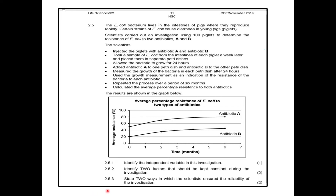This is a very nice question we can go through together. Before we look at the questions, we must read the introduction and get some context. The E. coli bacterium lives in the intestines of pigs where they reproduce rapidly. Certain strains of E. coli cause diarrhea in young pigs or piglets. Scientists carried out an investigation using 100 piglets to determine the resistance of E. coli to two antibiotics A and B. The scientists injected the piglets with antibiotic A and antibiotic B, took a sample of E. coli from the intestines of each piglet a week later and placed them in separate petri dishes, allowed the bacteria to grow for 24 hours, added antibiotic A to one petri dish and antibiotic B to the other, measured the growth of the bacteria in each petri dish after 24 hours, and used the growth measurement as an indication of the resistance of the bacteria to each antibiotic. They repeated the process over a period of six months and calculated the average percentage resistance to both antibiotics. The results are shown in the graph below.